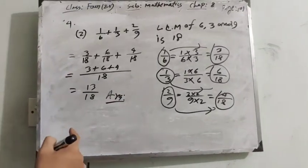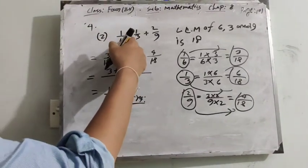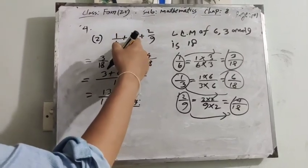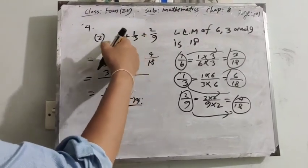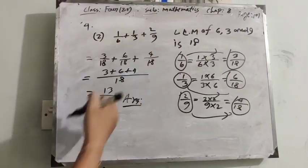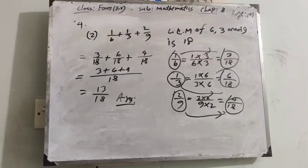This is the answer for the addition of 3 fractions: 1/6 plus 1/3 plus 2/9. Thank you for watching.